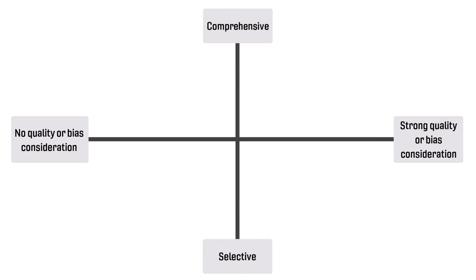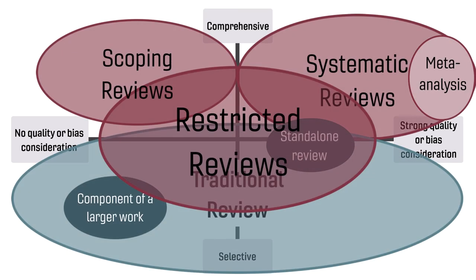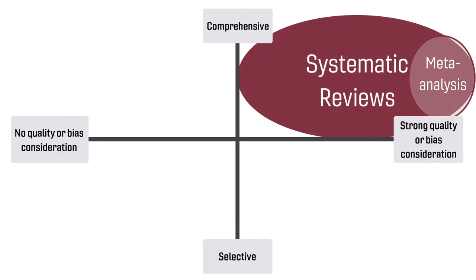Looking at the literature review landscape, you can see how different types of reviews might fall upon the matrix. You've probably noticed that the range within each type is broad, as there is a lot of variation between and within each category. Choosing the right approach for your question, objectives, and capacity is important. In this series, we'll be focusing only on the systematic review and meta-analysis; however, the tools and approaches we cover are valuable for any review type.